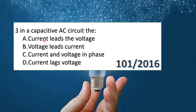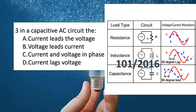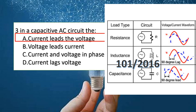In a capacitive AC circuit, what is the phase relationship? The options are: current leads voltage, voltage leads current, current and voltage are in phase, or current lags voltage. In a purely resistive circuit, current and voltage are in phase — there is no leading or lagging. But in a capacitive AC circuit, the current leads the voltage. So the answer is option A: current leads the voltage.